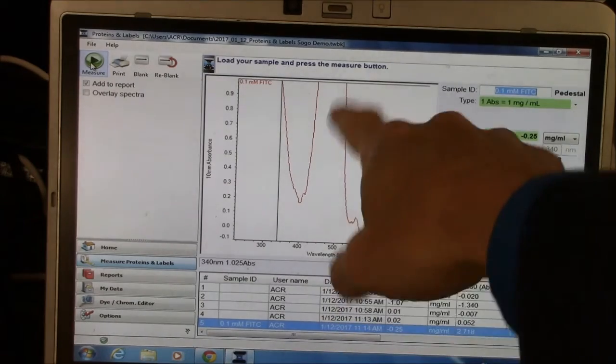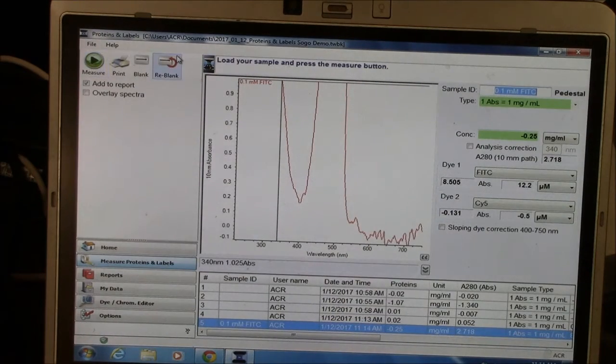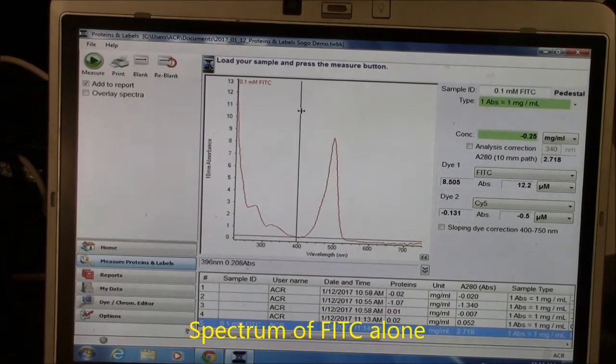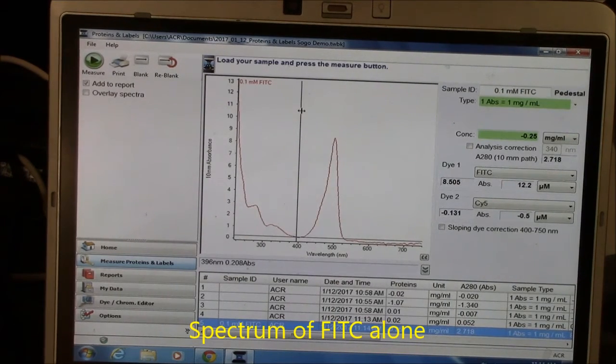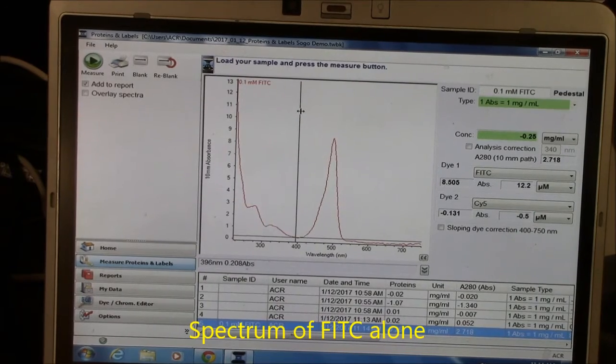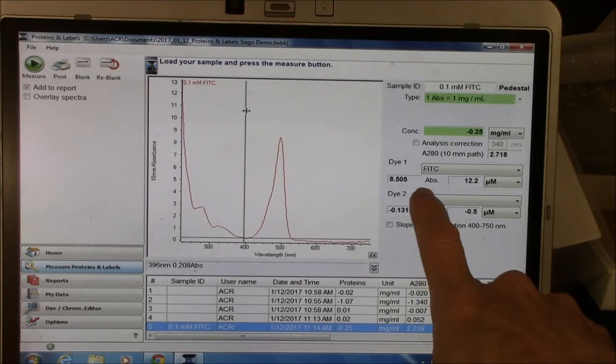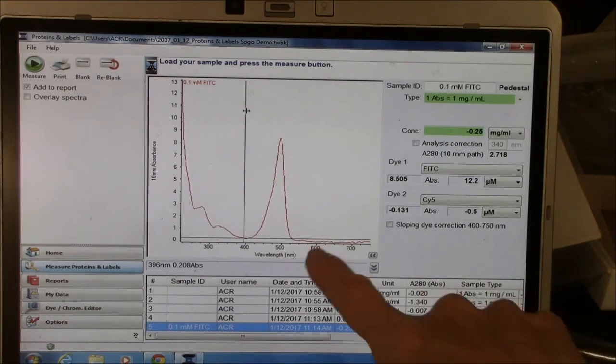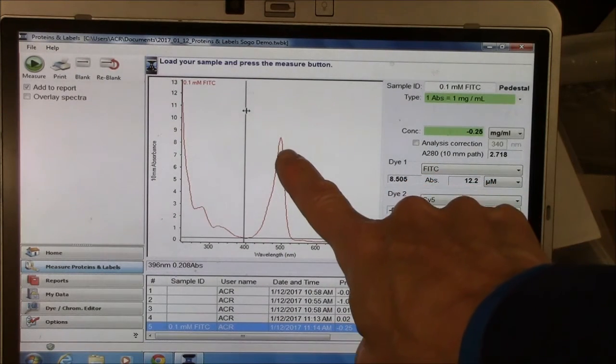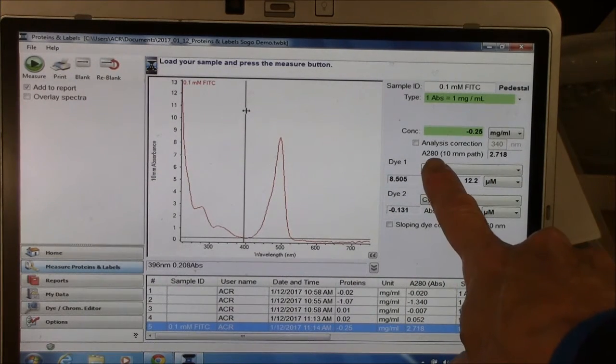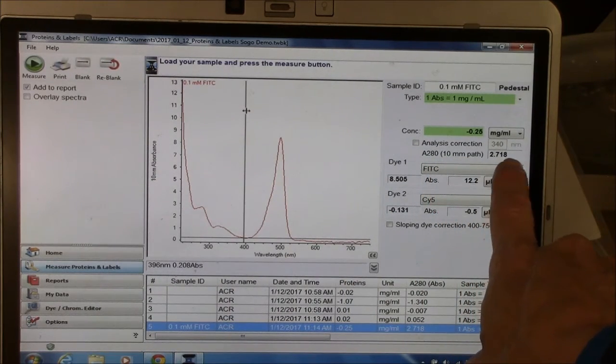This is my spectrum here, it's off scale, so I'll double click here. And this is a pretty good spectrum for my FITC. There are two important numbers here. One is measuring the absorbance at 495 nanometers, which is this peak here. And the other is measuring the absorbance at 280, and that's this number here.